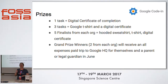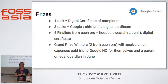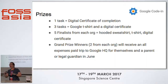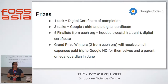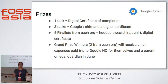If you complete one task, you get a digital certificate. Three tasks, you get a t-shirt — which is why a bunch of folks here in Singapore are wearing their Google Code In t-shirts. There are five finalists chosen by each organization; those finalists receive a hoodie, get their name on the blog, and receive a special finalist certificate. Two of those five finalists from each organization are grand prize winners and receive a trip to Google's San Francisco and Mountain View offices for four days — they get to bring a parent, do Segway rides, meet Google engineers, and meet one of their mentors in person.